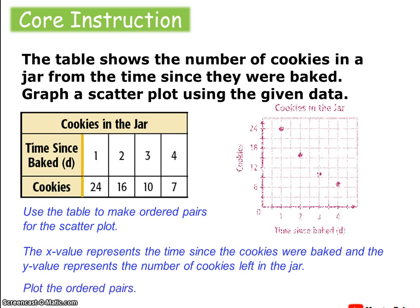We're going to plot the ordered pairs on a coordinate plane. These points would look something like this — this is considered a scatter plot. From here, we'll look at relationships and ask questions about the data. Does it make sense that the number of cookies appears to be decreasing over time?